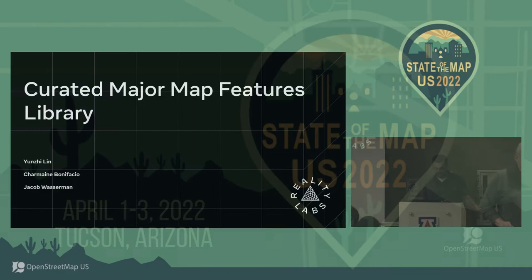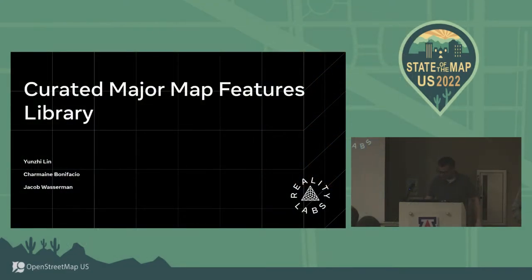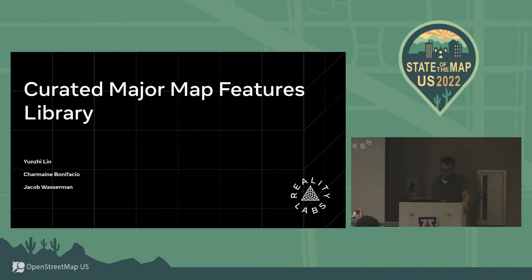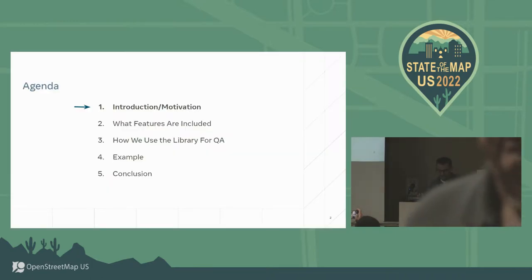Hey everybody. My name is Jake Wasserman from META. On behalf of UNC and Charmaine, we'll be talking about a project that we started over the last six months or a year called the Curated Major Map Features Library.